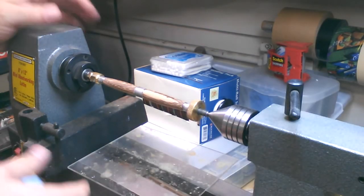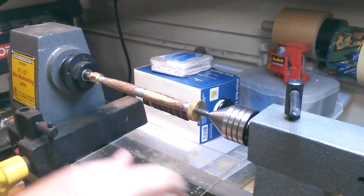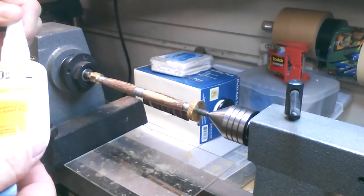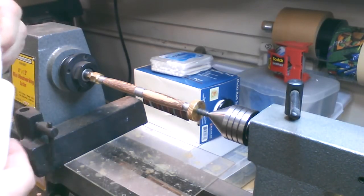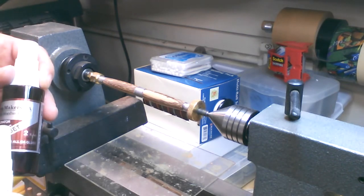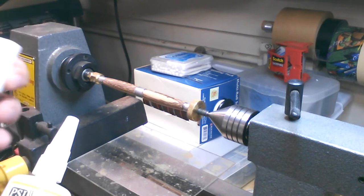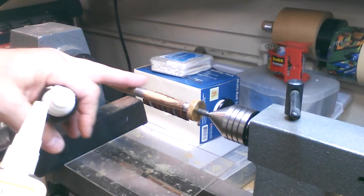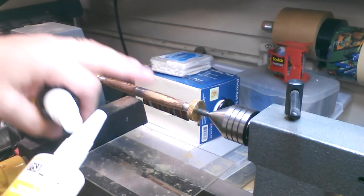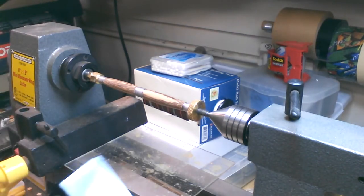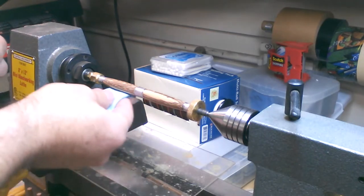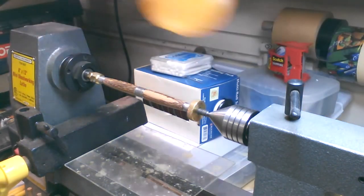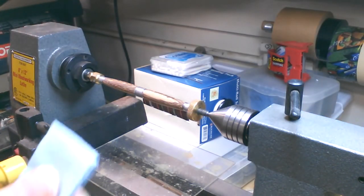Here we are at the small lathe. Now, what I'm going to do is I'm going to do a CA finish on this. That's basically cyanoacrylate. It's something I pick up at PSI. I'm also going to be using their Penmakers Insta-Set. So this is an accelerator for the CA glue, and I'm going to use that as a finish on here. So I'm going to use the thin to start, and I'm going to use these little blue shop towels I've cut up into little pieces to apply this on here. I'm also going to use, for the first couple coats, I'm going to use a little boil-in seed oil on the pad. So I'm going to go ahead and get started with that.